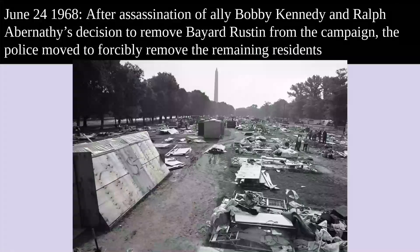However, the campaign began to unravel. There were internal disagreements — Ralph Abernathy had removed Bayard Rustin from the campaign. Bayard Rustin was not willing to take a strong stance against the Vietnam War at the time. There was also the assassination of Bobby Kennedy, who was seen as an ally, and this really devastated and weakened morale. People began to leave, and eventually the police moved in and forcibly removed all the remaining residents who were trying to stay, even though the permit had expired. At that point the occupation had become unlawful, and they were not able to achieve their goals.